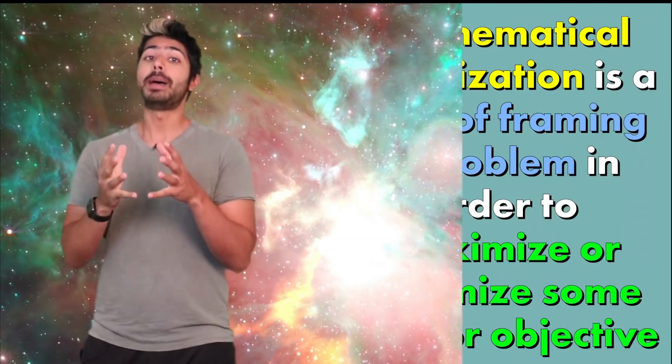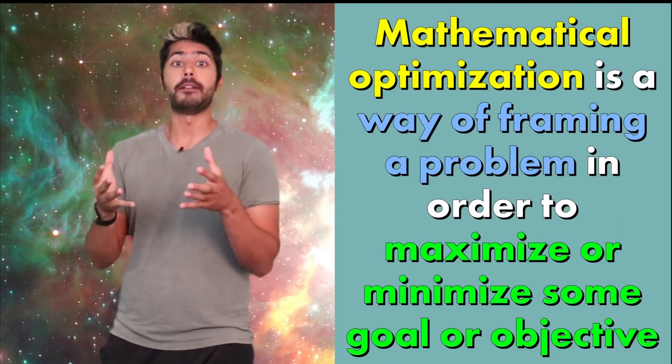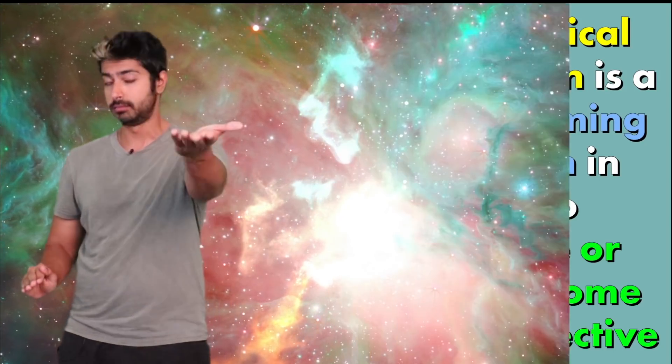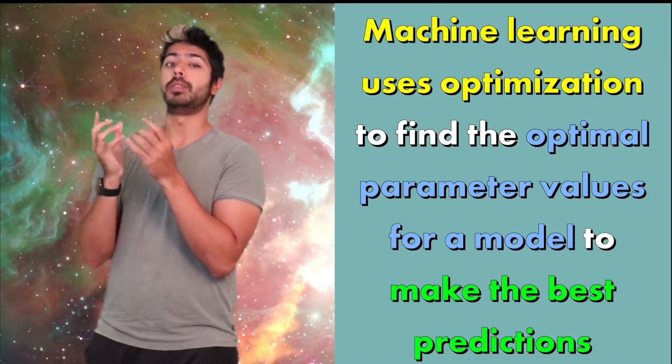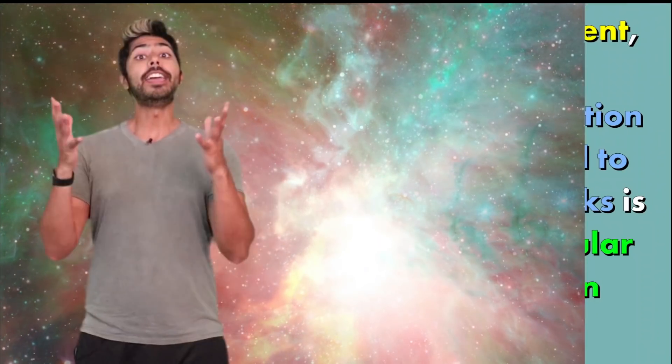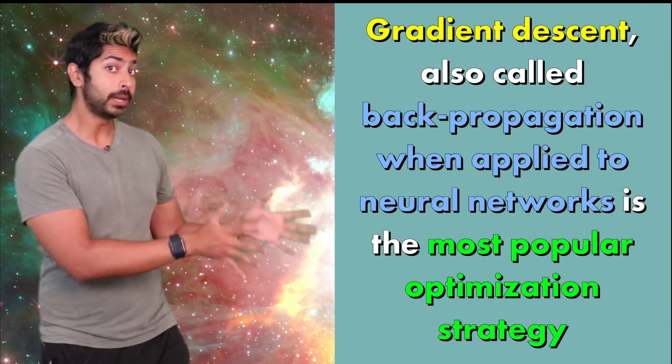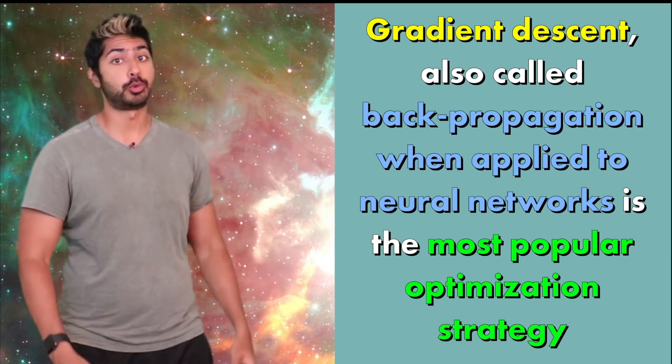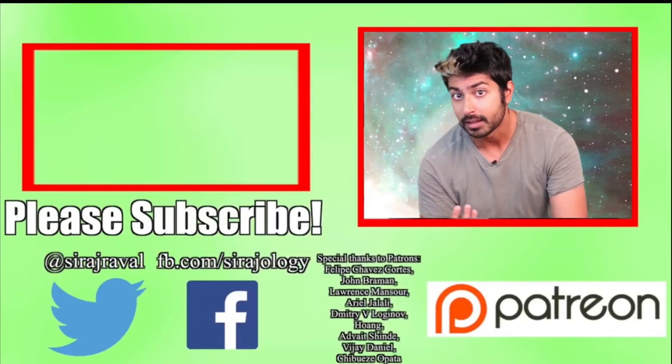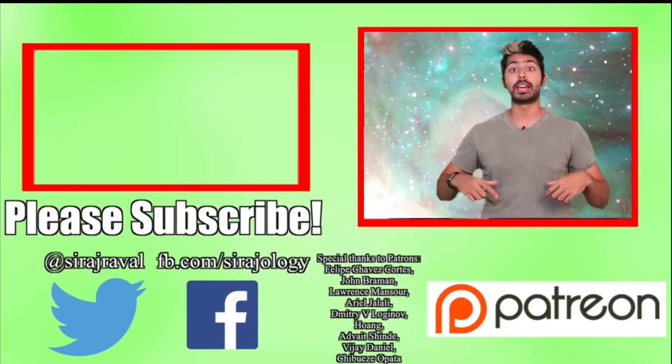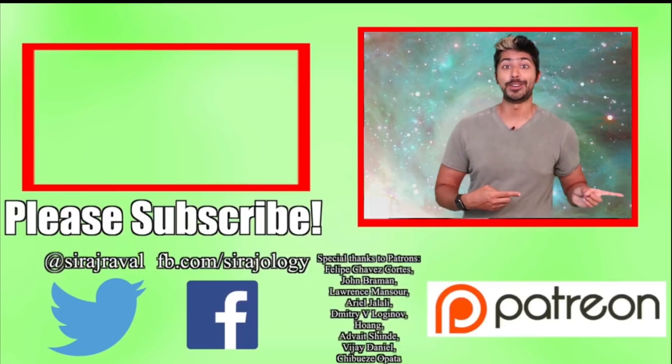I know that was a lot, but stay with me. Three things to remember from this video. Mathematical optimization is a way of framing a problem in order to maximize or minimize some goal or objective. Machine learning uses optimization to find the optimal parameter values for a model to make the best predictions. And gradient descent, also called backpropagation when applied to neural networks, is the most popular optimization strategy. What's my next topic? Using machine learning you could probably predict it. Subscribe for more educational videos about AI, and for now, I've got a guest lecture at UCLA. So, thanks for watching.